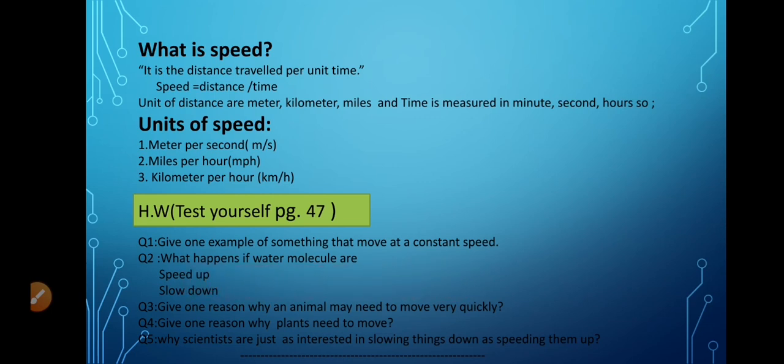Question number 4: Give one reason why plants need to move. Plants move? Yes, they move. They move towards the light or they want to get the light. Question number 5: Why scientists are just as interested in slowing things down as speeding them up? Because scientists want to control the man-made machines. These all. Thank you. Have a nice day. Allah Hafiz.